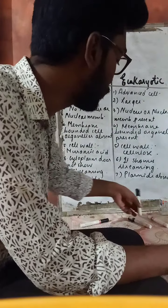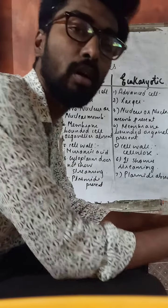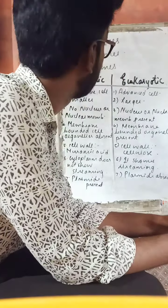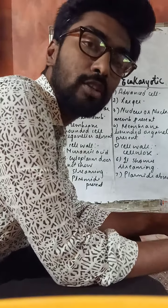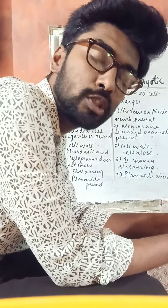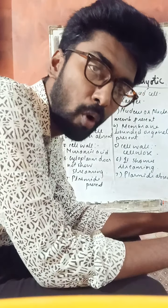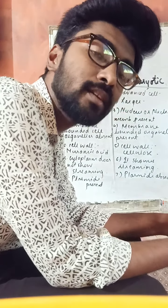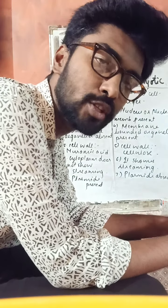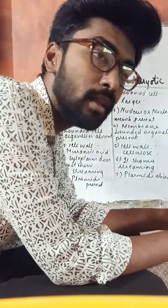Good afternoon students. Today we are going to study some of the smaller cell organelles, or cell bodies. The first one is generally called sphaerosomes. Sphaerosomes are the smaller membrane-bounded bodies present in the cytoplasm which help in the synthesis and storage of fat, and they are generally present in the plant cell.